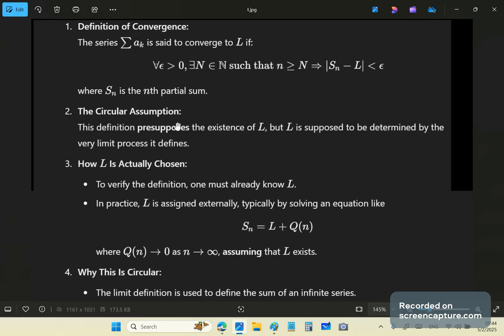Then the circular assumption happens now. This definition presupposes the existence of L. But L is supposed to be determined by the very limit process it defines. This means you need to know this L. Otherwise you have to guess it.